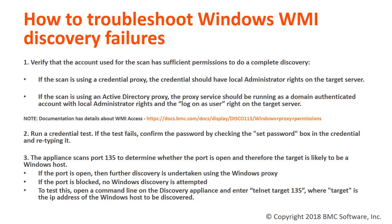The third thing you can do — and this is a very common problem that people aren't always aware of — is that the discovery appliance does an initial scan of port 135 on the target to see if that port is open. The intent is to find out if the endpoint is actually a Windows host. If that port is open and reachable from the appliance, discovery turns control over to the Windows proxy for more processing. But if the port is blocked, the appliance does not know it's a Windows server and no Windows discovery will be attempted.